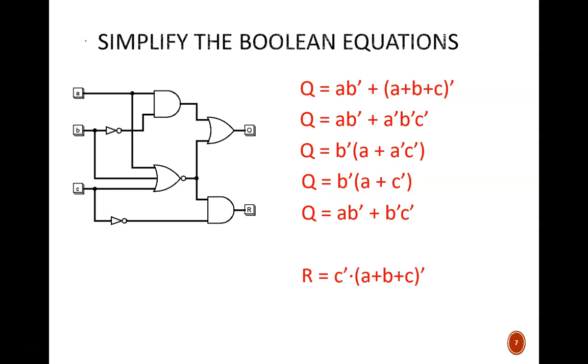With R, we again start with De Morgan's theorem. Next, we notice C prime ANDed with C prime, which leaves us with just one C prime, providing this final equation.